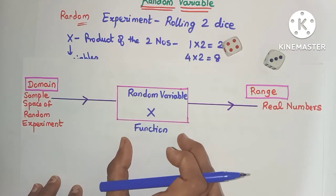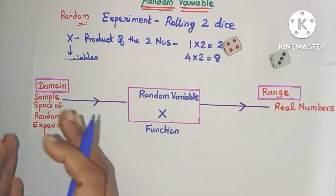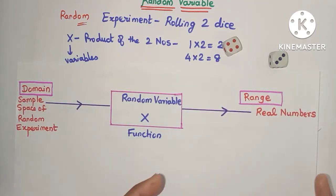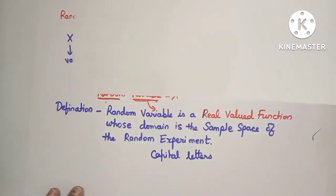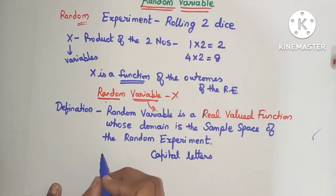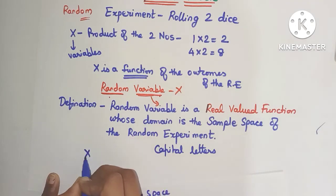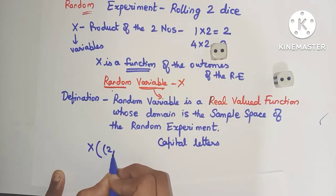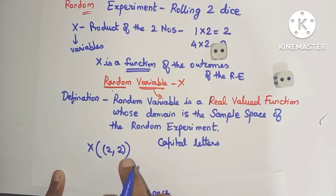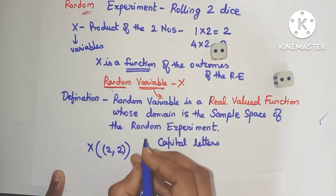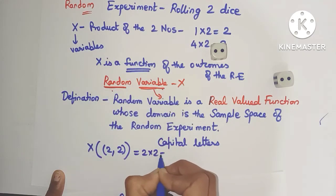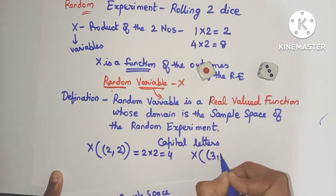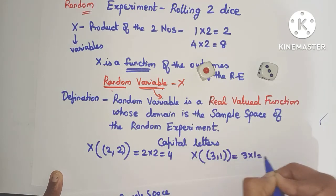Pictorially, the random variable is a function whose input is the domain — the sample space of the experiment — and whose output is the range, which is a real number. Coming back to the example: x of (2, 2) — product of two numbers — gives 2 into 2 which is 4. And x of (3, 1) gives 3 into 1 which is 3.